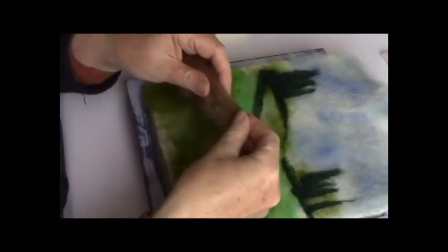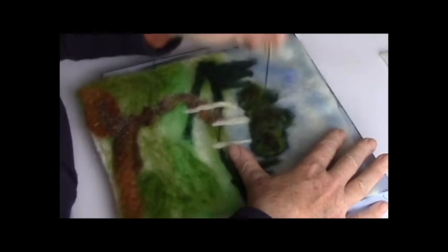Take the brown and create a pathway from the bottom to the base of the trees. Again lift your picture out of the foam to release the fibers where they're stuck.